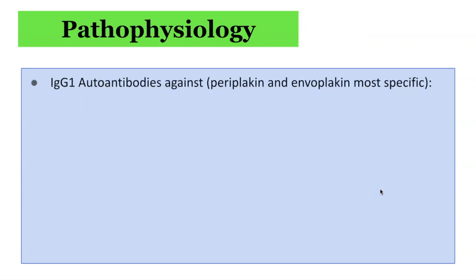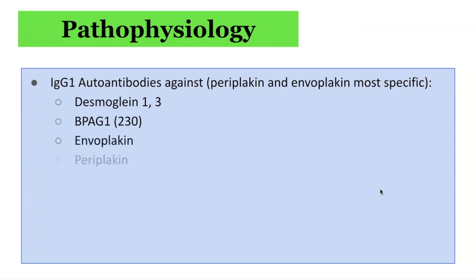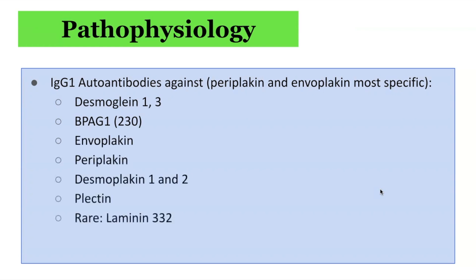In terms of the underlying pathophysiology, paraneoplastic pemphigus involves IgG1-subclass antibodies against components of the desmosome and some hemidesmosomes, with periplakin and envoplakin being most specific for this condition. However, the target antigens can include Desmoglein 1 and 3 — also targeted in pemphigus foliaceus and pemphigus vulgaris — Bullous Pemphigoid Antigen 1 (BP230), also a target in bullous pemphigoid, Envoplakin, Periplakin, Desmoplakin 1 and 2, Plectin, and in rare cases Laminin 332 as well.